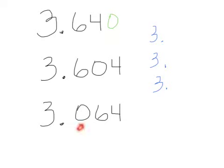Six hundred forty is bigger than six hundred four, and both of them are bigger than sixty-four, which means that we have three and six hundred forty thousandths, three and six hundred four thousandths, and three and sixty-four thousandths.